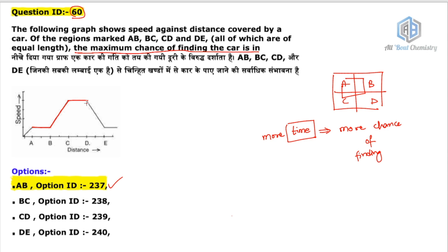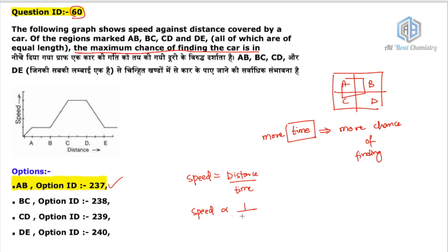All the distances — AB, BC, CD, DE — are equal. Now using the basic relationship: speed equals distance divided by time. Since distance is the same everywhere (constant), speed is inversely proportional to time. That means where the car has high speed, it will spend less time; where speed is low, it spends more time.